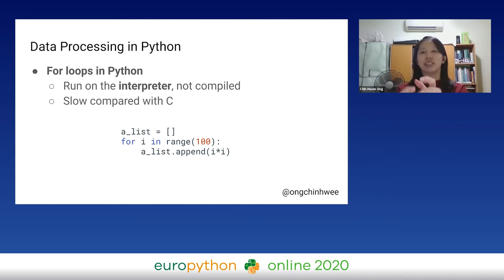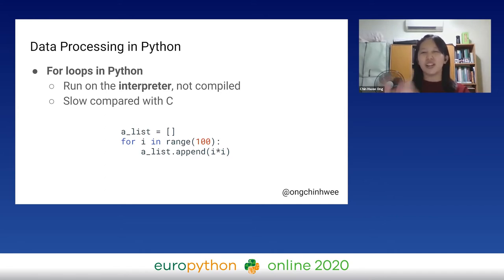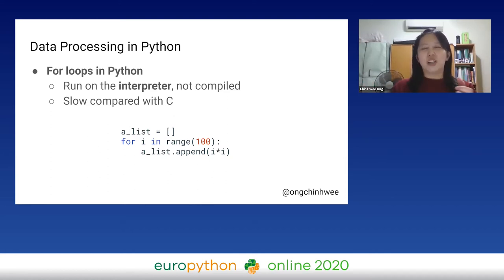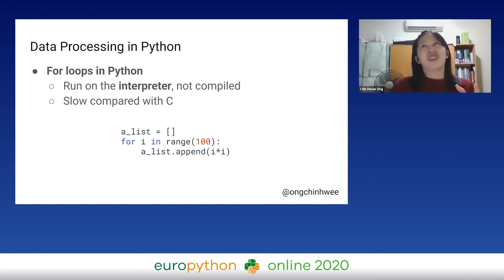We initialize an empty list, use the for loop, and then append the value to the list. But as mentioned by our previous speaker, for loops are actually a bad idea. Because for loops run under the interpreter and are not compiled. If we compare the performance of for loops in Python, it's terribly slow — at least one to two hundred times slower, which is quite disastrous.